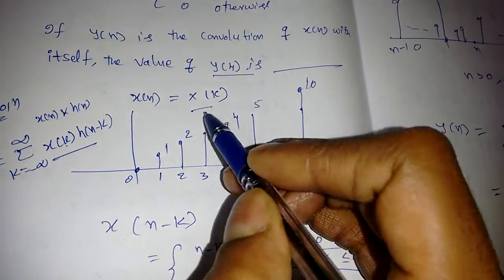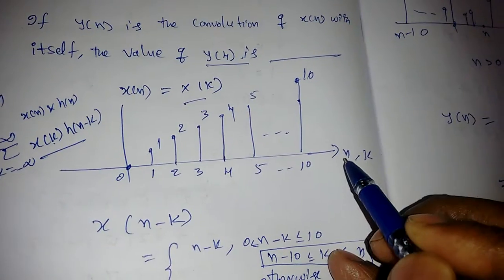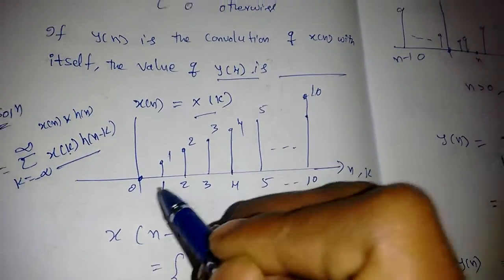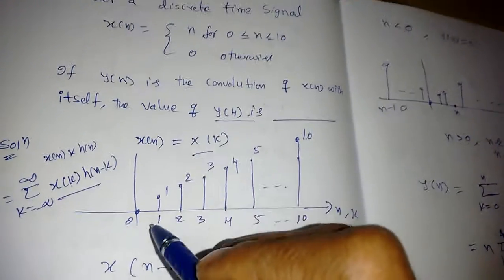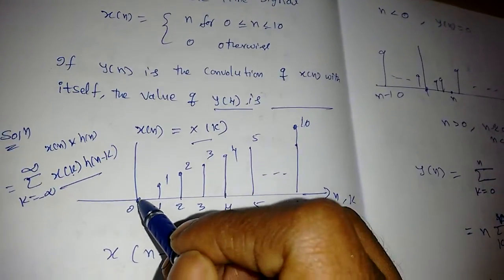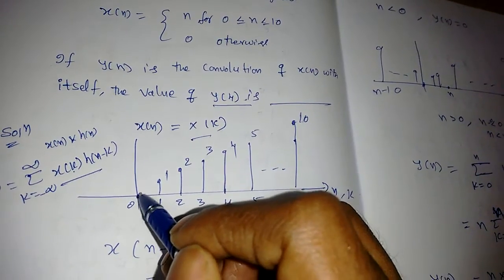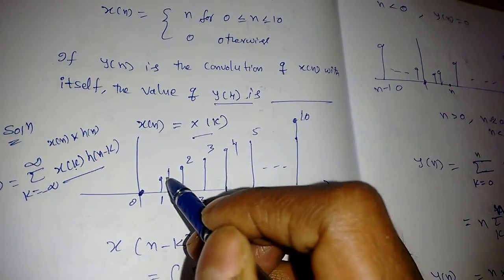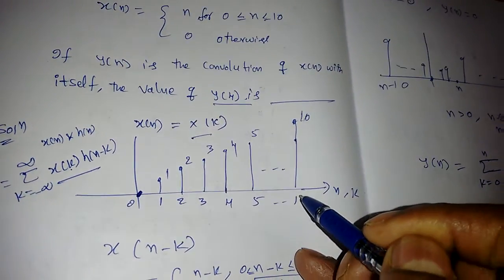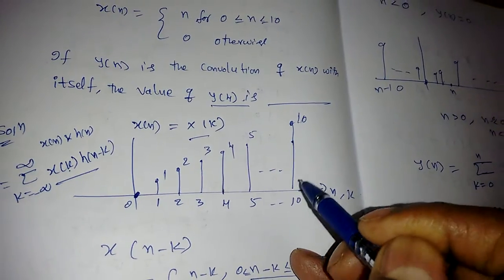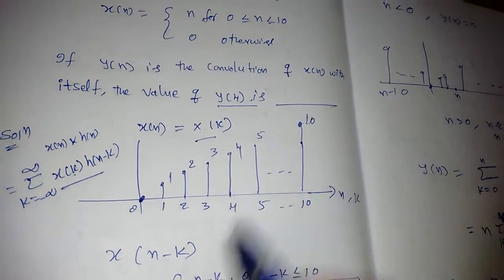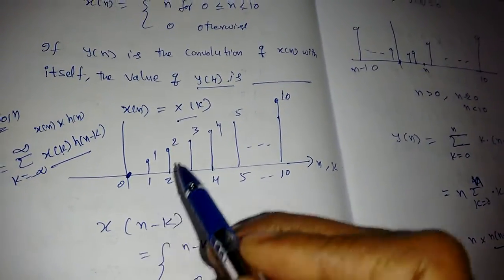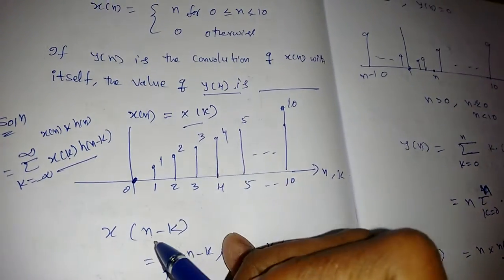First we find x[k] by changing the domain name. x[k] is: at k=0, x=0; at k=1, x=1; at k=2, x=2; and so on up to k=10, x=10. Similarly we need to find x[n-k].